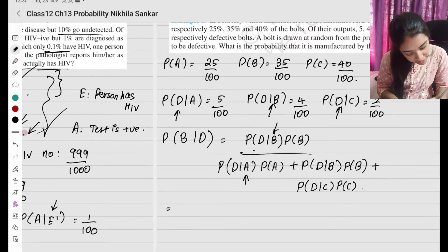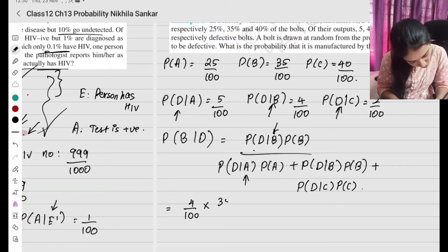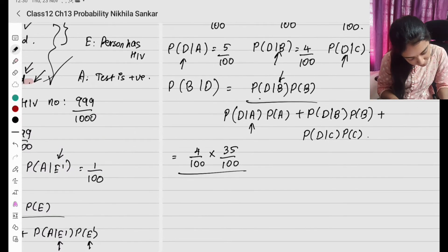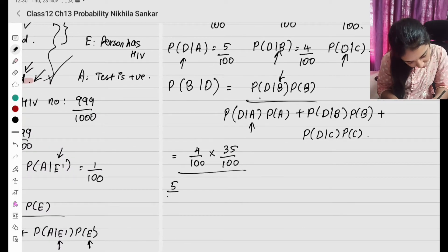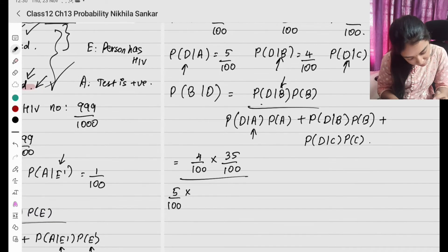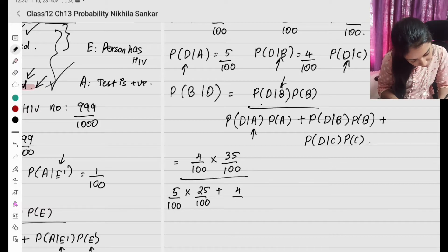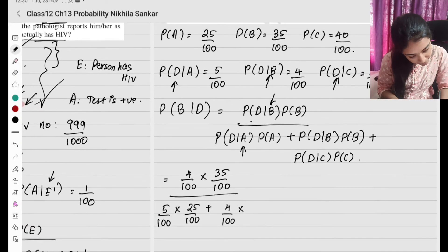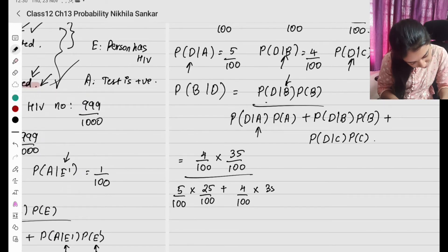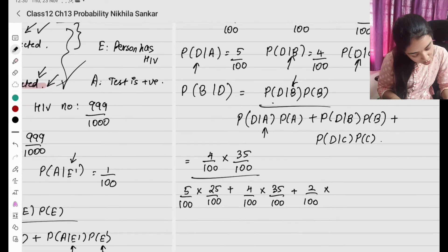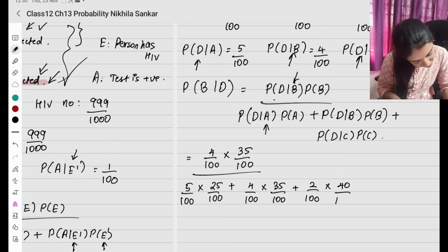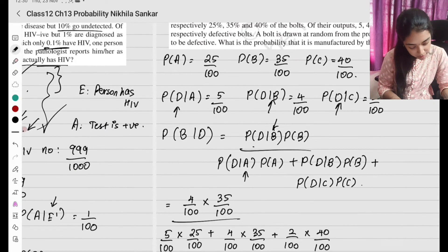Substituting the values: numerator is D given B — 4 by 100 times probability of B which is 35 by 100. Denominator: D given A is 5 by 100 times A is 25 by 100, plus D given B is 4 by 100 times B is 35 by 100, plus D given C is 2 by 100 times C is 40 by 100.